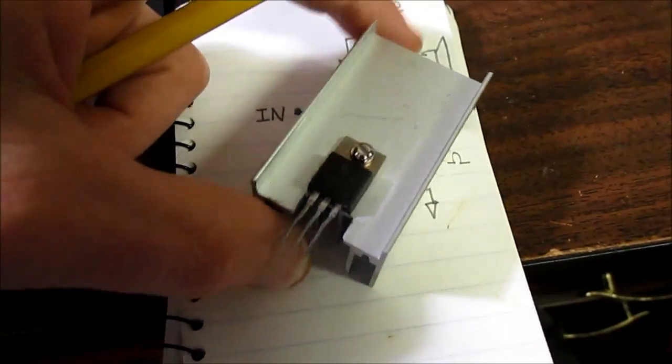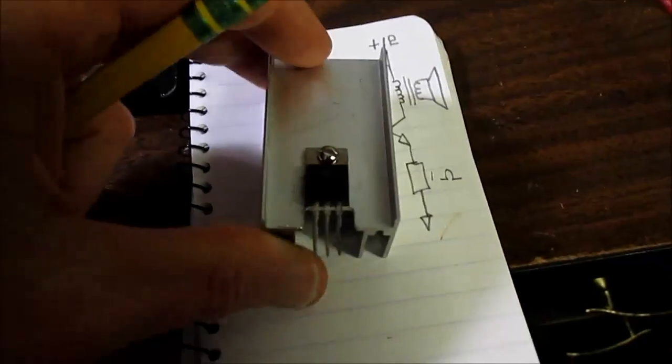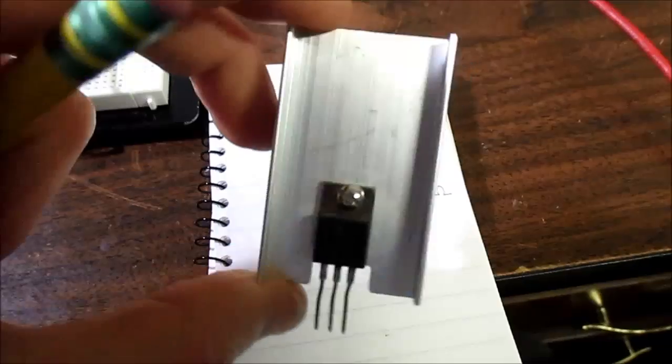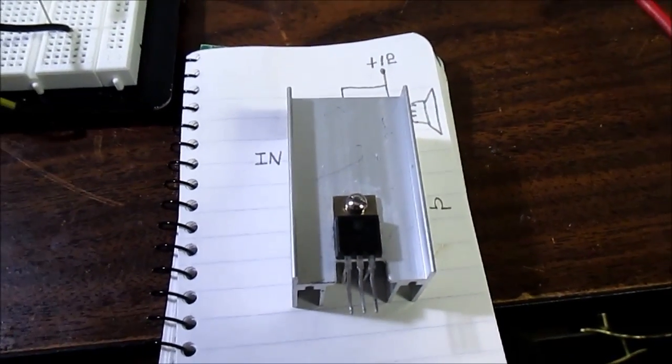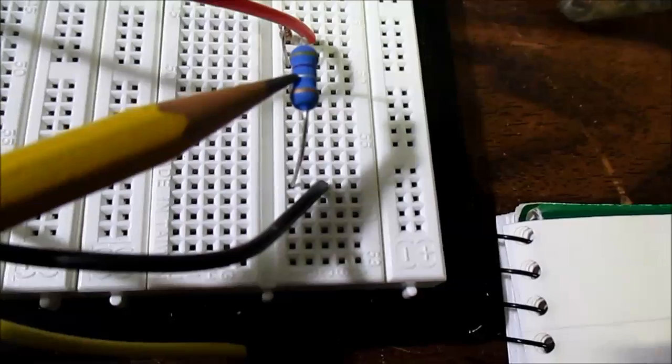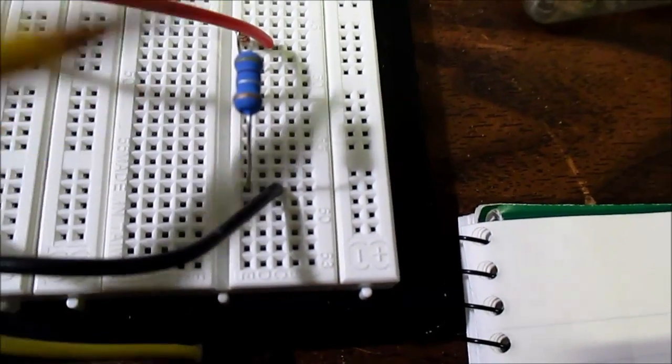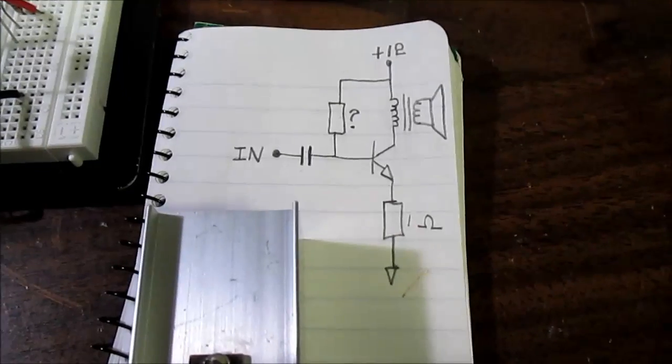So, I pulled this 3055 transistor out of the parts drawer, put it on a heat sink. I'm going to bias it at 500 milliamps. I couldn't find a 1 ohm resistor. I'll see how this 0.47 goes. If it's not working, I can put another one in series.